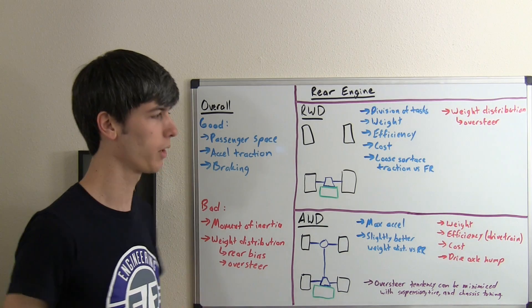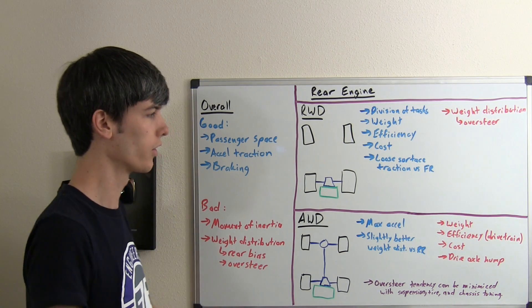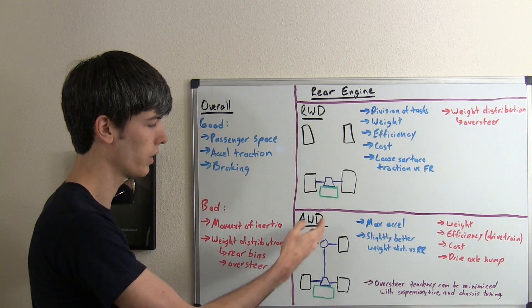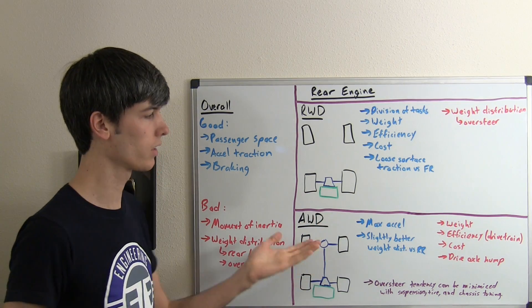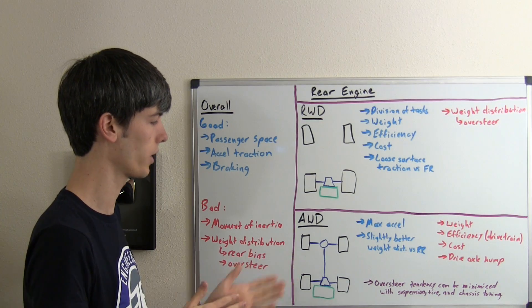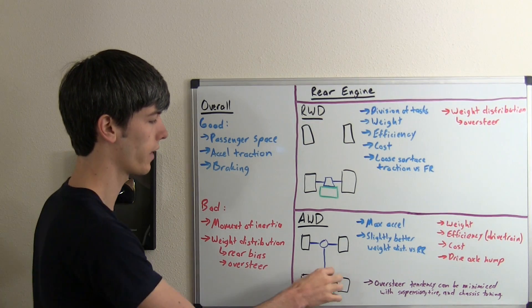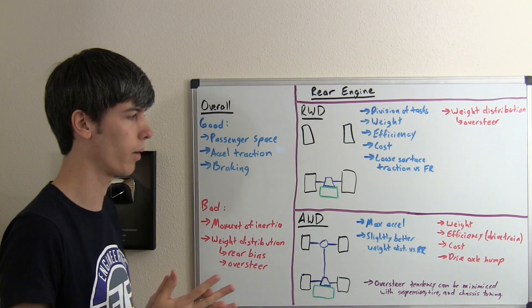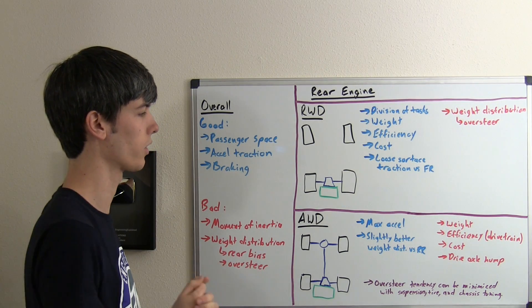That's not necessarily a good thing, because added weight isn't a good thing. The disadvantages are added weight, efficiency losses through the additional drivetrain, and the additional cost of the additional drivetrain. On top of which, you're adding this drive axle hump, which can interfere with the passenger compartment—another thing to take into consideration.